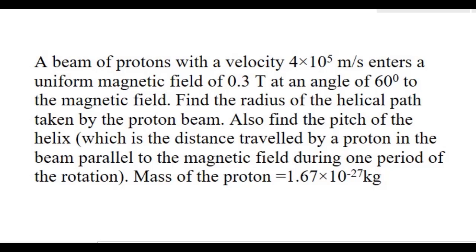A beam of protons with a velocity 4 × 10⁵ m/s enters a uniform magnetic field of 0.3 Tesla at an angle of 60 degrees to the magnetic field. Find the radius of the helical path taken by the proton beam. Also find the pitch of the helix.